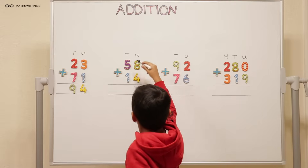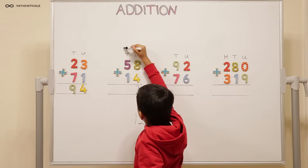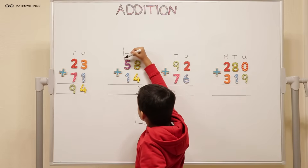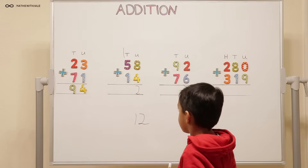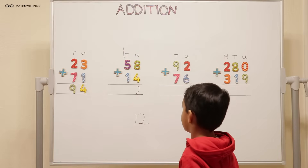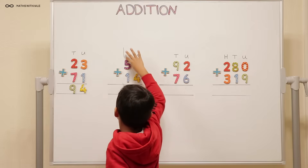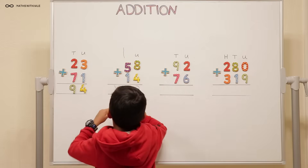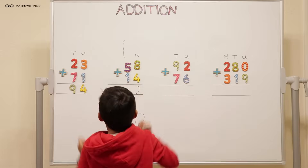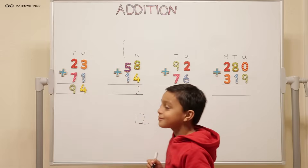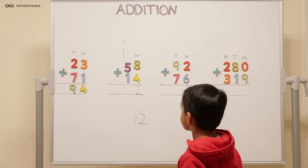But we have that one ten. So what do we do? We put a one here. So we have a one ten joining the other tens. Very good. So you've put one ten over there. So what are you going to do now?